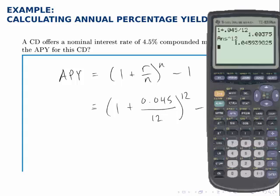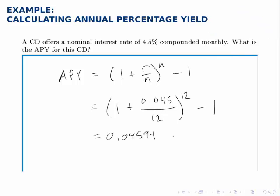And then finally subtract 1. To get our final answer, the annual percentage yield is 0.04594, which corresponds to a percentage of 4.594%.